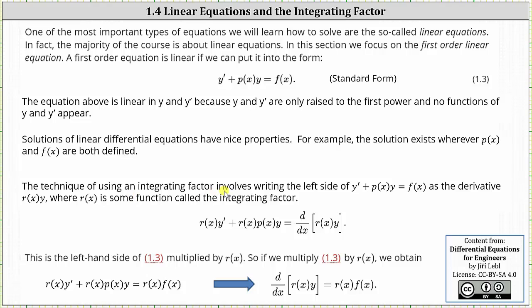The technique of using an integrating factor involves writing the left side of y prime plus p of x times y equals f of x as the derivative of r of x times y, where r of x is some function called the integrating factor. Multiplying by r of x gives us r of x times y prime plus r of x times p of x times y, which is equal to the derivative of r of x times y with respect to x.